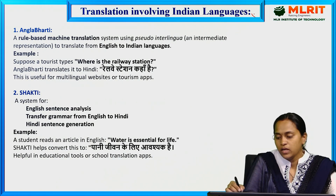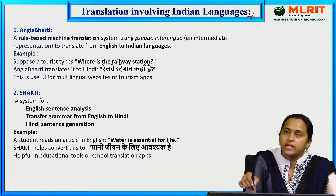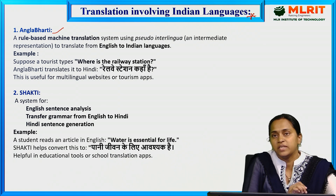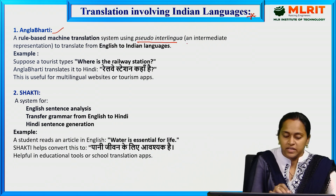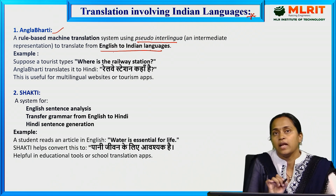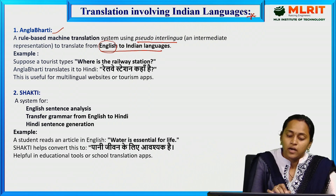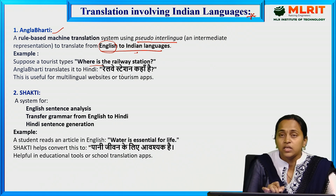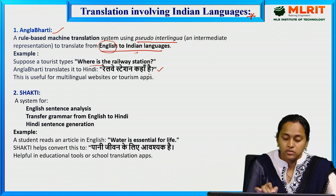Coming to translation tools involving Indian languages. The first is Angla Bharati — a rule-based machine translation approach that uses a pseudo-interlingua to translate from English to Indian languages such as Telugu and Sanskrit. For example, 'Where is the railway station?' is translated into Hindi as 'Railway station kaha hai?' This tool is useful for tourism purposes.